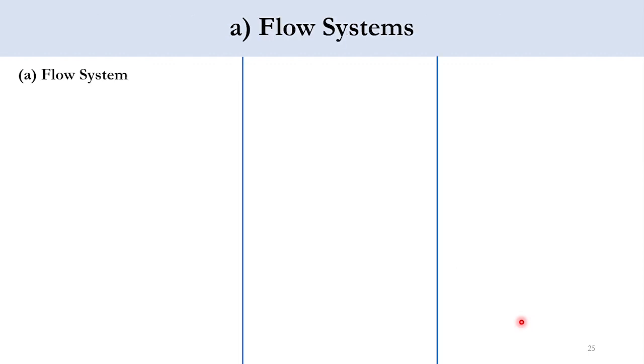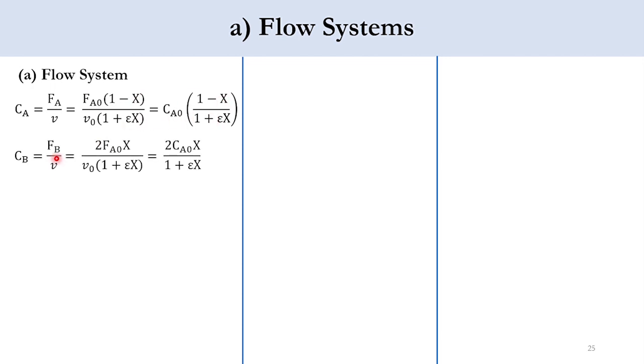Moving to the second part for the flow system, we know that C_A is equal to F_A over small v. This F means the molar flow rate, small v is the volumetric flow rate. Now, if you remember that v is equal to v_0 times 1 plus epsilon x, P_0 over P, T over T_0. But since we are assuming that P and T are constant in the system, these two terms will be excluded. Now F_A0 over v_0 will become C_A0, so C_A0 times 1 minus x over 1 plus epsilon x. For C_B, F_B over v, F_B is equal to 2 times F_A0 x. In the same way as we have developed for the batch system, the same table will be developed, only the n will be replaced by F. So 2 times F_A0 x over v_0 times 1 plus epsilon x. F_A0 over v_0 will go to 2C_A0 x over 1 plus epsilon x.